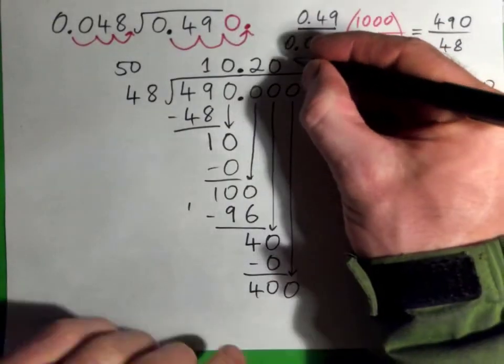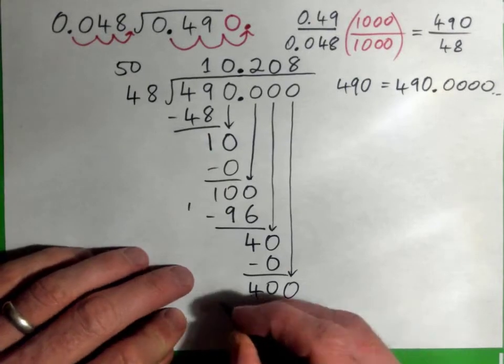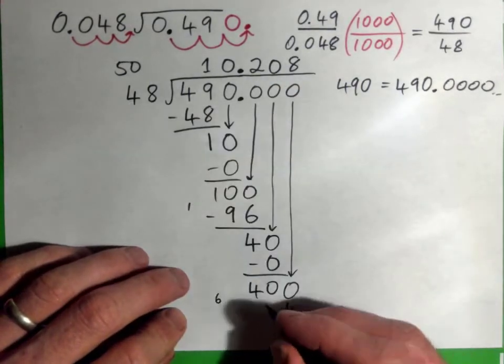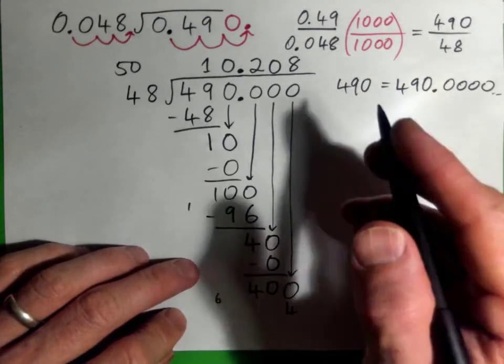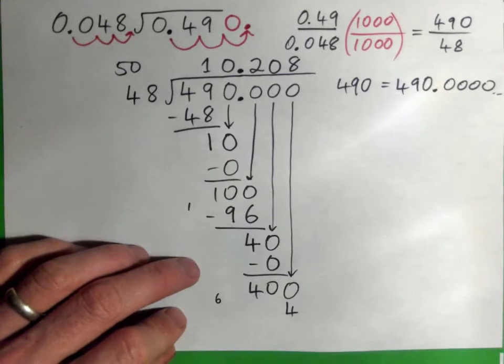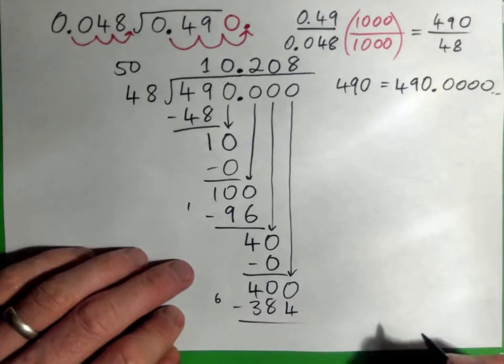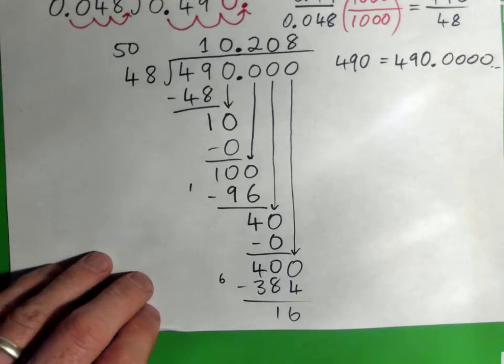It's about 8 times. So 8 times 8, 64, carry 6. 8 times 4, 32, and 6. Let's see. 8 times 4 is 32. 32 plus 6 is 38. Yeah. Good point. And subtract. And we get 16. And so on.